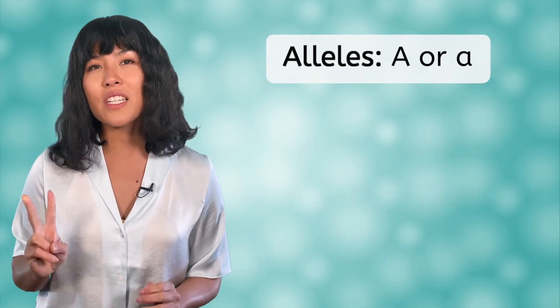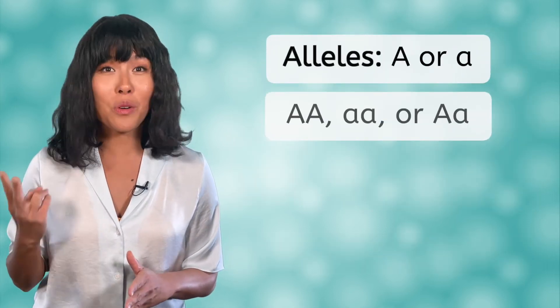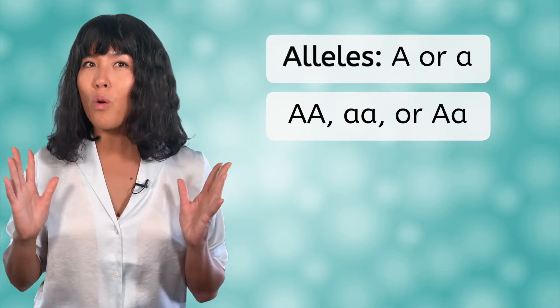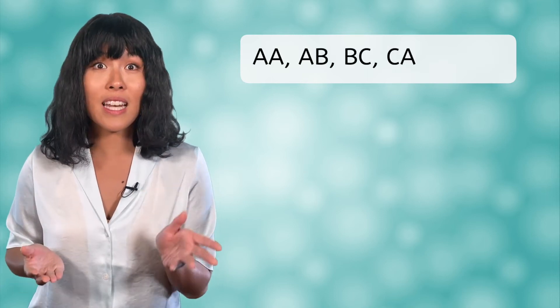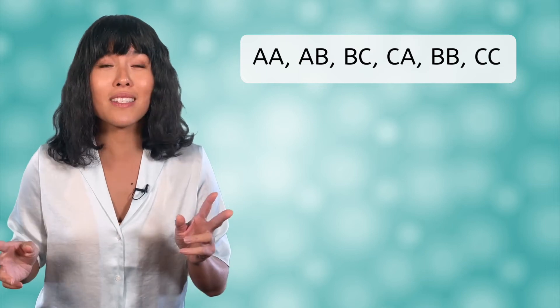We know that any individual organism, including you, can only have two copies of an allele for a gene, because you get one from mom and one from dad. For the traits we've looked at so far, there were two possible alleles. But what if there were three possible alleles — we'll call them A, B, and C. You might have two A's, or an A and B, or a B and C, or a C and A, or two B's, or two C's. Suddenly, there are a lot more possible combinations.